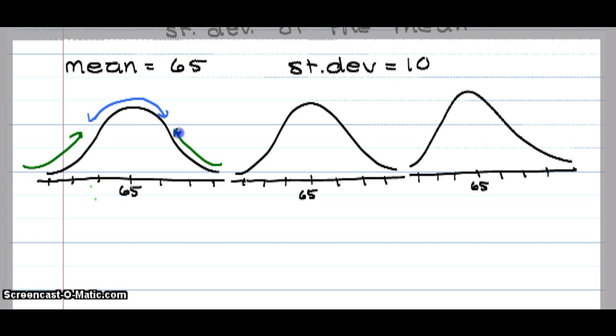That point where we change the concavity, that's called an inflection point. And if you draw a vertical line straight down from that inflection point, that should be one standard deviation away from the mean. So that distance is one standard deviation.